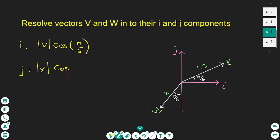The j-component will also be the magnitude of V times the cosine of the angle the vector V makes with the vertical axis. That angle is π/2 minus π/6, which simplifies to give the magnitude of V times the cosine of 2π/6, which simplifies to π/3.